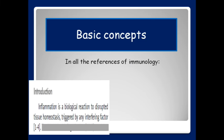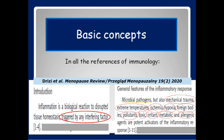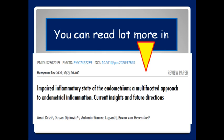As a matter of fact, in all the references of immunology, inflammation is a biological reaction to disrupted tissue homeostasis, triggered by any interfering factor. That includes microbial pathogens, true, but also mechanical trauma, extreme temperatures, ischemia, hypoxia, foreign bodies, pollutants, toxic, irritant, metabolic, and allergenic agents. And so, that's it for the definition today.